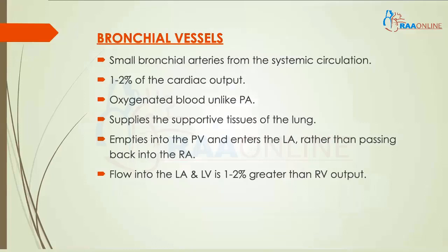The second component — high pressure but low flow — consists of the bronchial vessels. These are small bronchial arteries which arise from the systemic circulation and provide only one to two percent of the cardiac output. Unlike the pulmonary artery, which supplies deoxygenated blood from the right atrium and right ventricle, these bronchial vessels supply oxygenated blood to the supportive tissues of the lung. From the bronchial arteries, blood enters the bronchial veins, and through the bronchopulmonary anastomosis, blood enters the pulmonary vein and then the left atrium, rather than going into the right atrium and right ventricle.